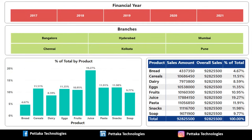In this example we have created a report for finding the percent of total by category and by year and month. We have five financial years from 2017 to 2021 and we have several branches. We have visualized the percentage of total data by product in column chart and matrix table format.